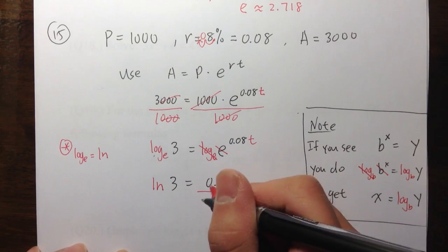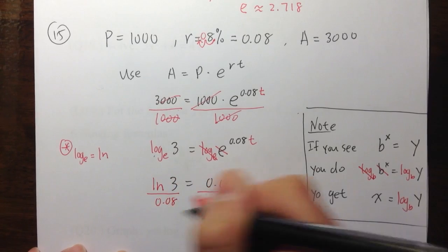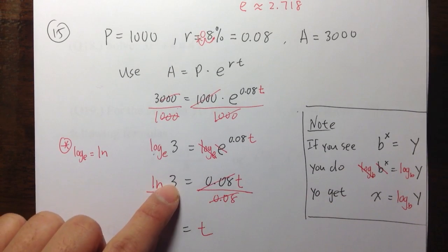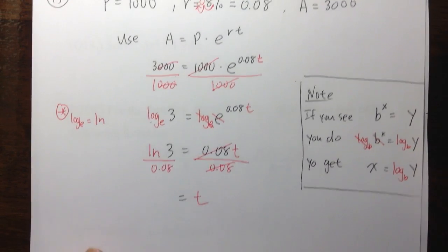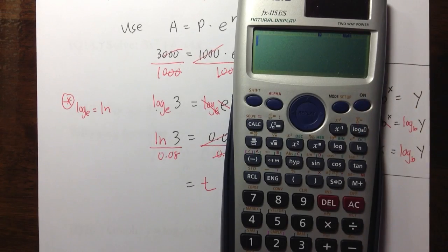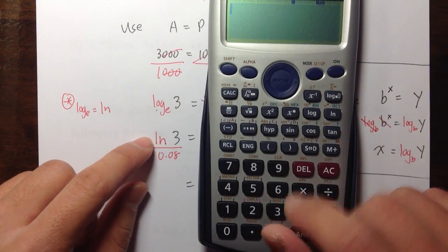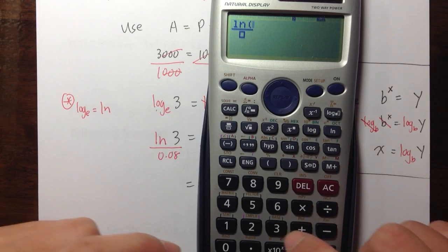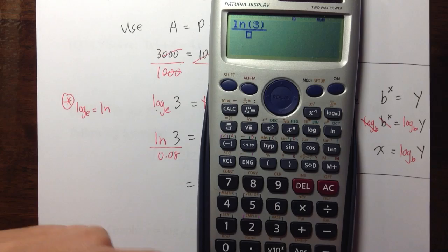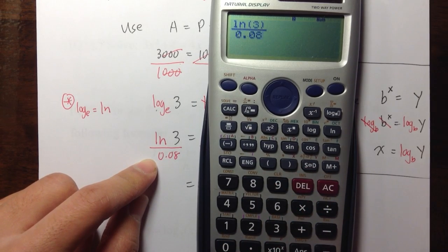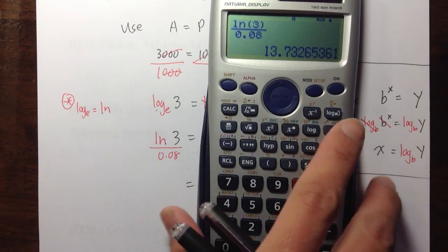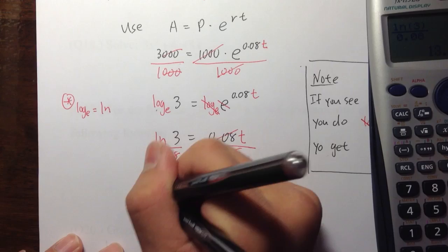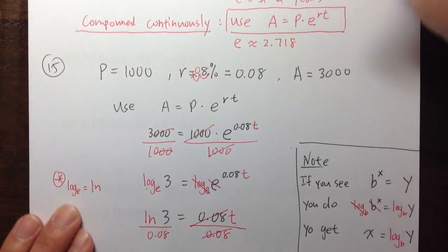To solve for T, we divide both sides by 0.08, giving T equals ln(3) over 0.08. Using the calculator's fraction key and ln button: ln(3) divided by 0.08 equals approximately 13.73.